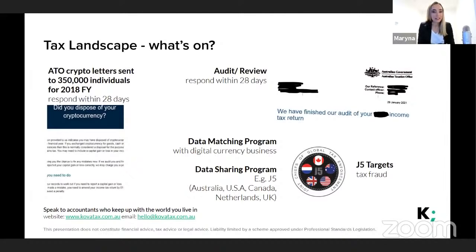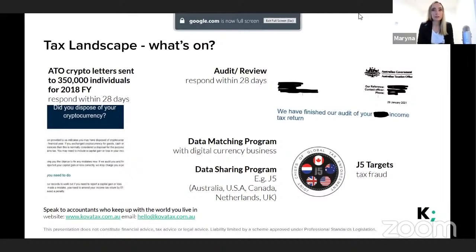The ATO has been sending letters to Australian crypto investors and traders — roughly 350,000 already sent for the 2018 financial year. The same will happen for 2019 and eventually 2020. The ATO also conducts audits and reviews. A review is a shorter audit focusing on a particular item, such as capital gains. An audit has a higher scope and may involve a full review of your entire tax return. If you receive a letter from the ATO, you must respond within 28 days.